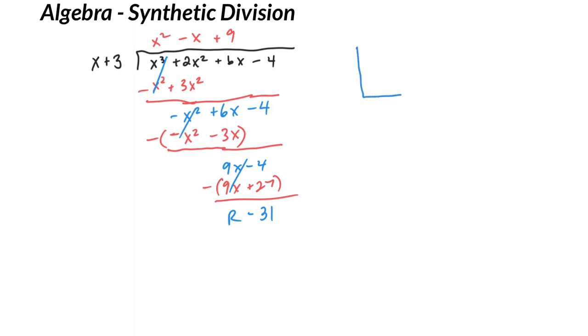And it's a little bit different. First of all, we line up all of our coefficients. So I'm going to just write down, we have 1x cubed, 2x squared, 6x, negative 4. I'm going to write those down.